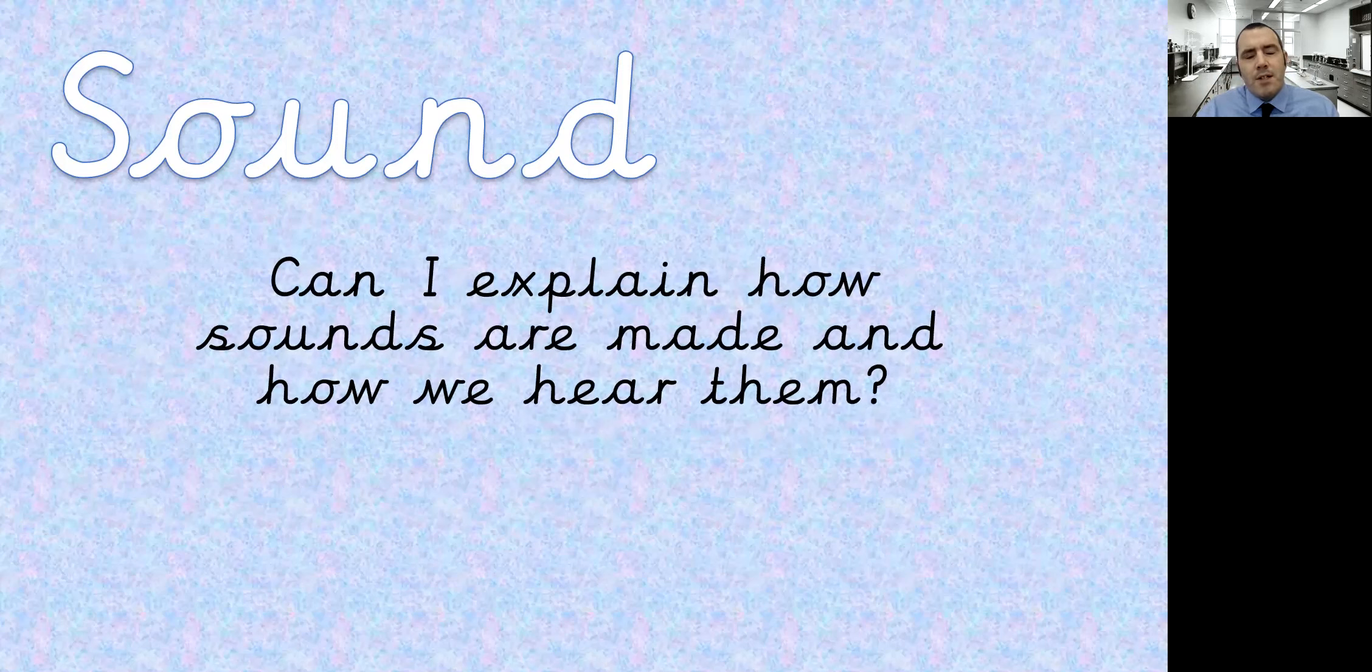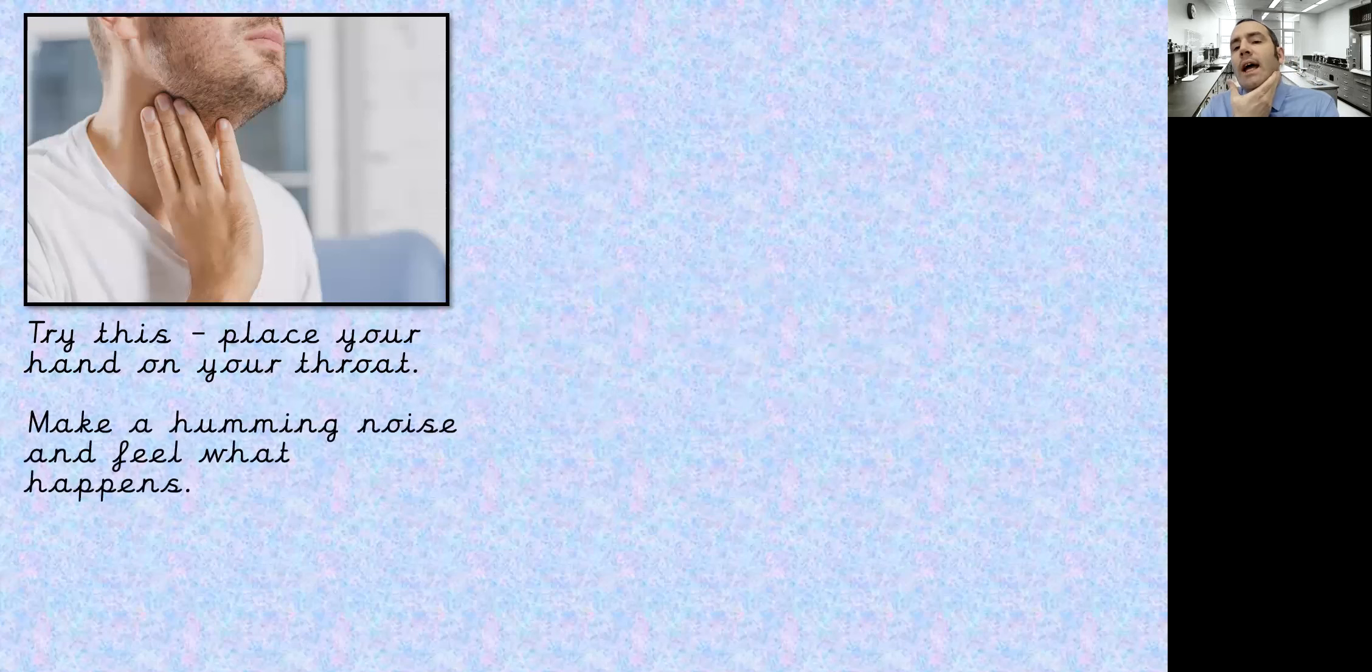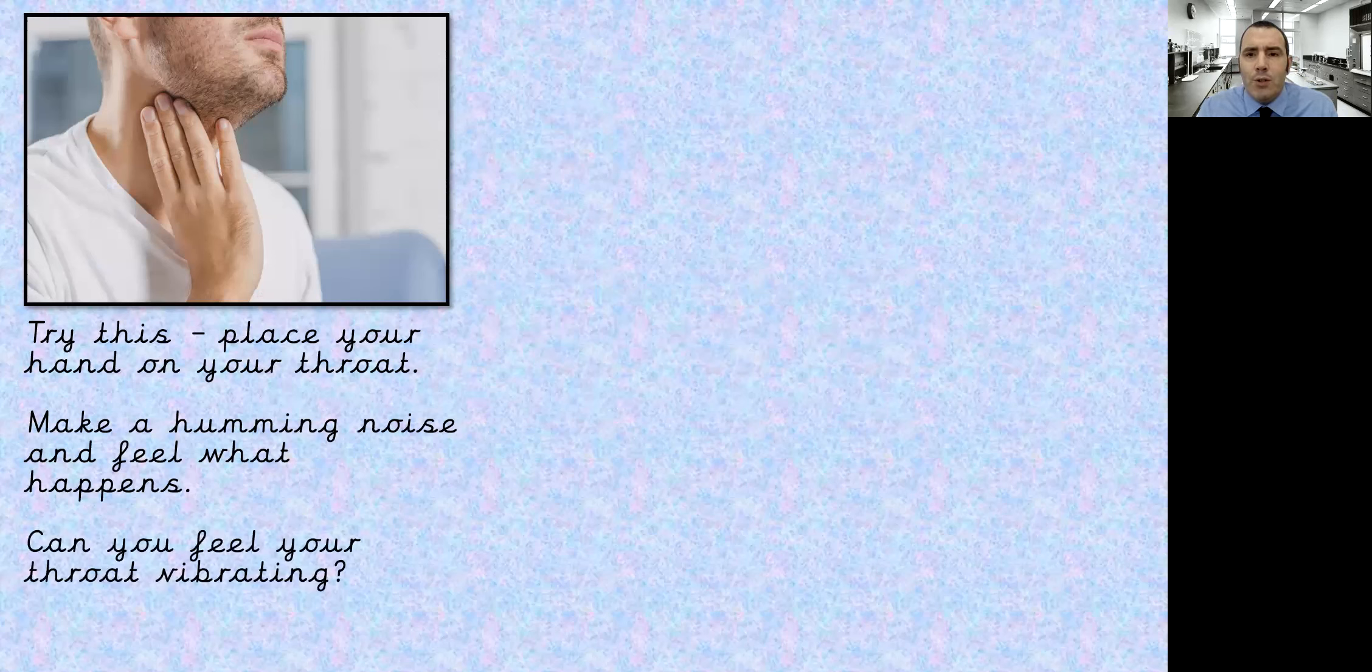Now some of this you might already know, but there's going to be our vocabulary as we go through, the names of the various parts of the ear, and there's going to be the scientific names for the things that we're going to come across. So to start understanding how sound is made, try this. Place your hand on your throat, just gently underneath your chin. Make a humming noise and feel what happens. Can you feel your throat vibrating? That's the sound being produced.